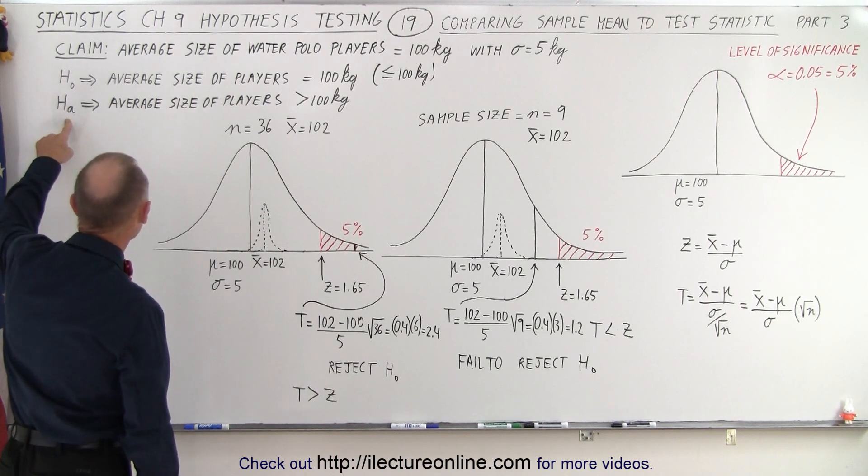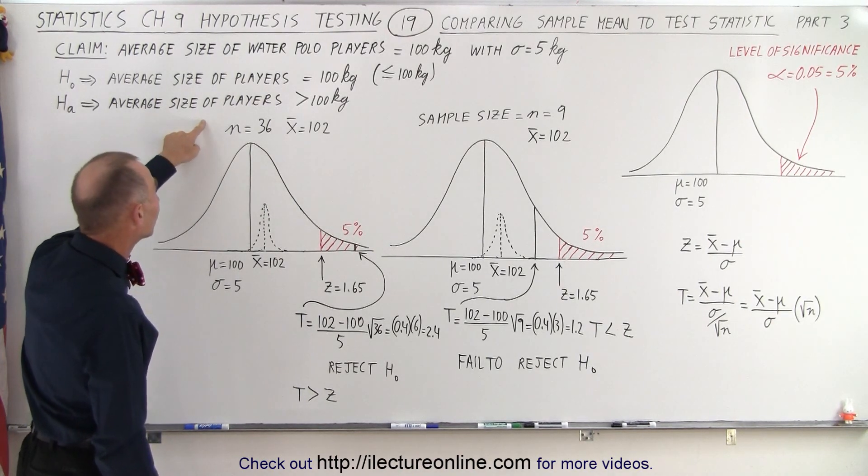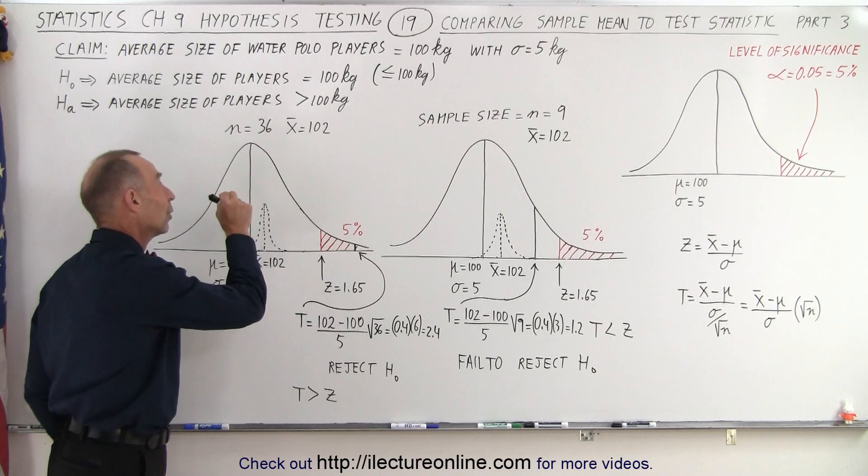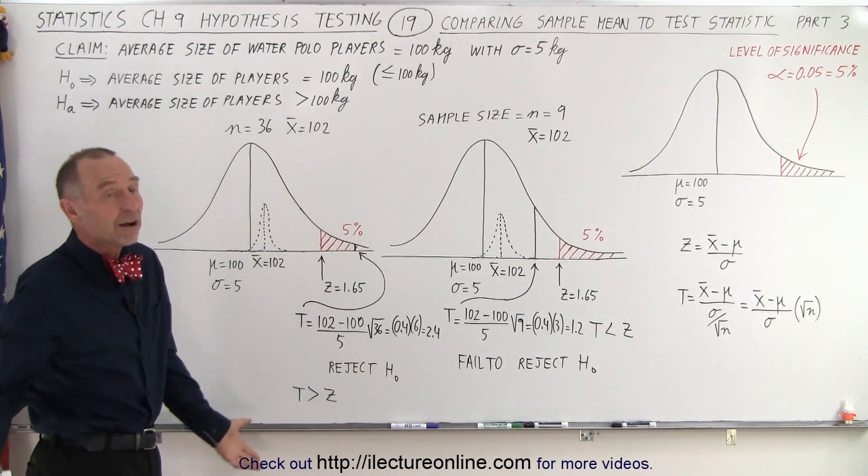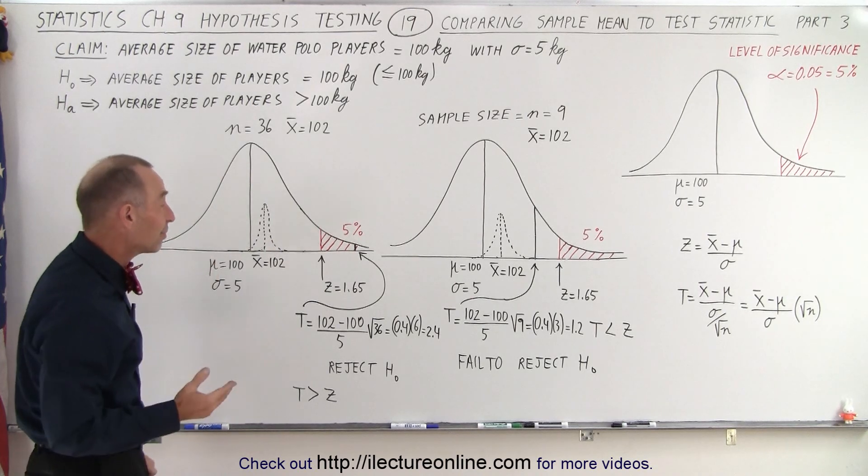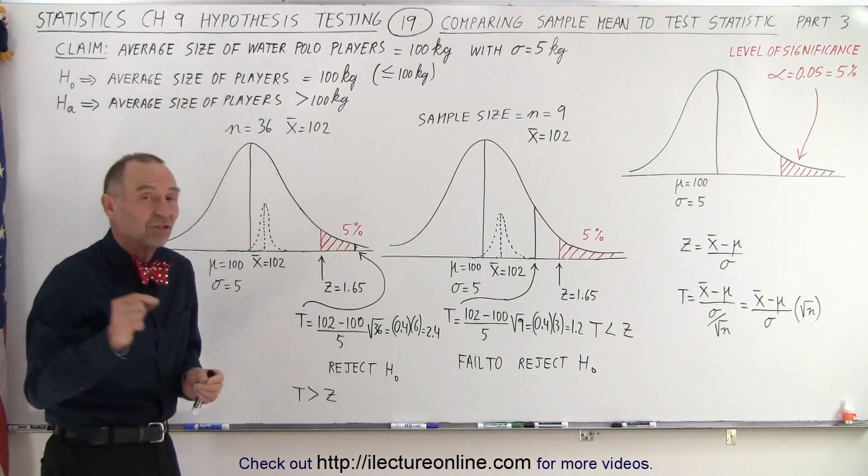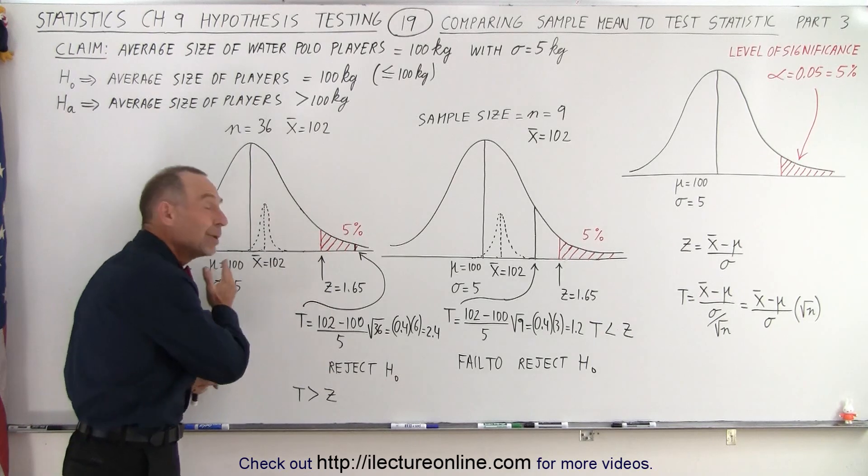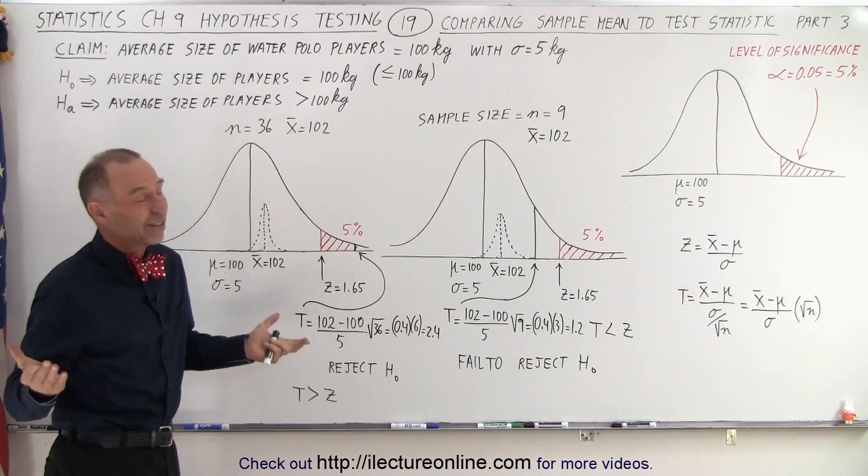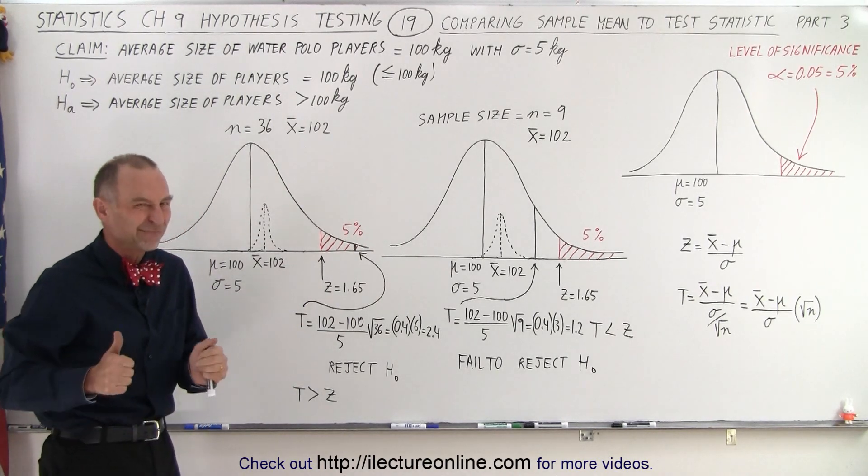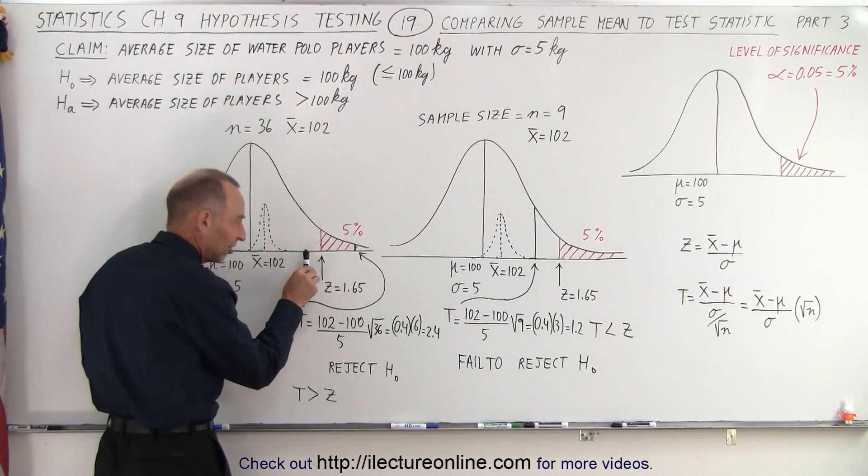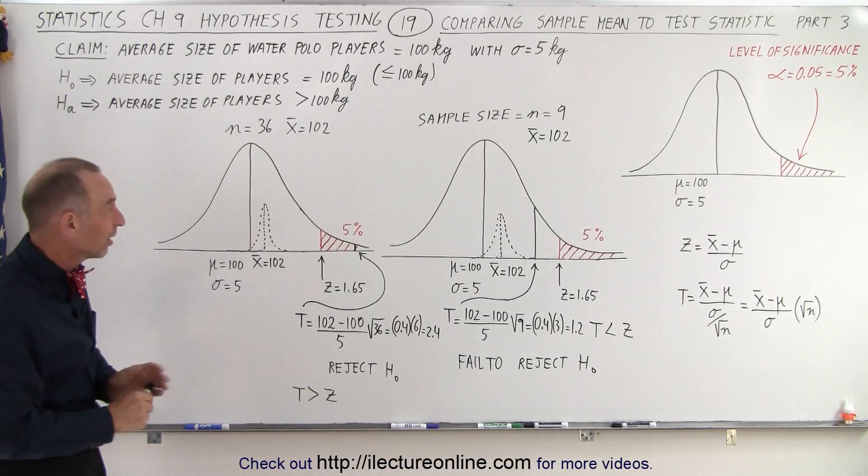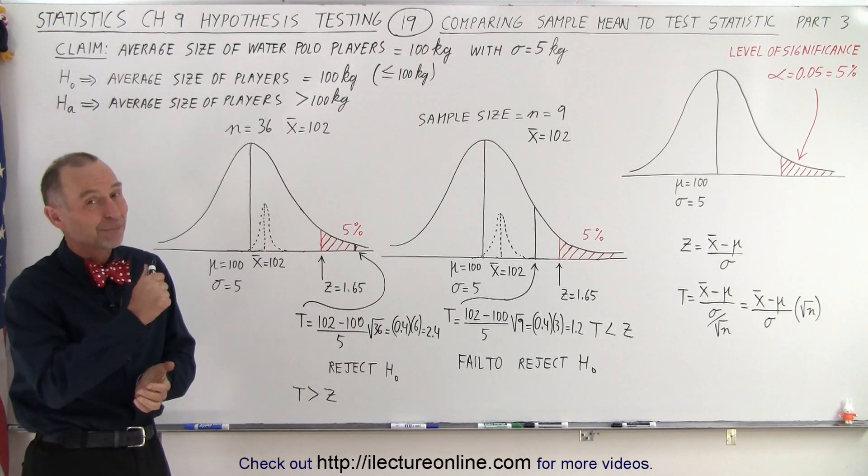We therefore can accept the alternate hypothesis that the average size of players is greater than 100 kilograms. The initial claim that the average was 100 has been negated by this one test with sample size of 36. Now, how confident are we? Well, we had a level of significance of 5%, so the confidence level that we made the right decision in doing so is 95%. That's pretty good, but it still leaves a little bit of room that that might have been the wrong decision. But 95% confidence is pretty good. Notice that the test statistic was quite a bit into the critical region, not right at the border, but quite a bit in. We feel pretty confident that we probably made the right decision, and that is how it's done.